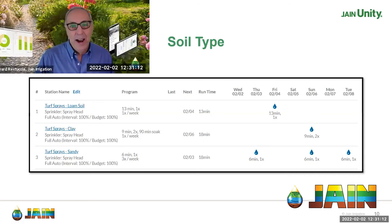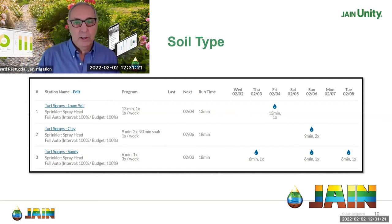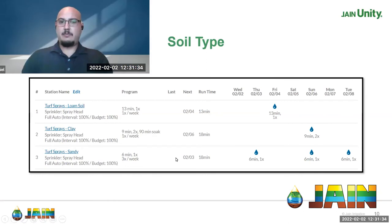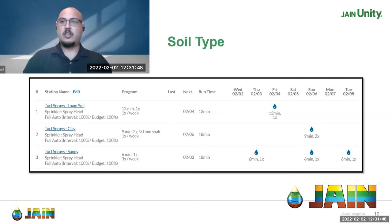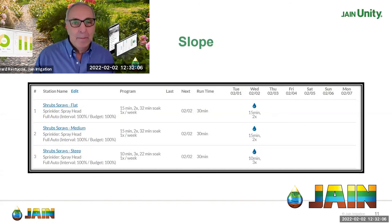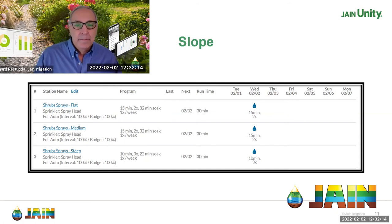Knowing your soil type is really important for watering, and there are easy ways to determine it. The ET water controller has a helpful menu to assist you, and there's a simple jar method — fill a jar with water and some soil, let it settle, and determine your soil type. You can also just take the soil and ball it up in your hands: if it sticks together hard and solid and doesn't come apart, you have clay; depending on how easy it breaks up or clumps tells you how sandy or loamy it is.